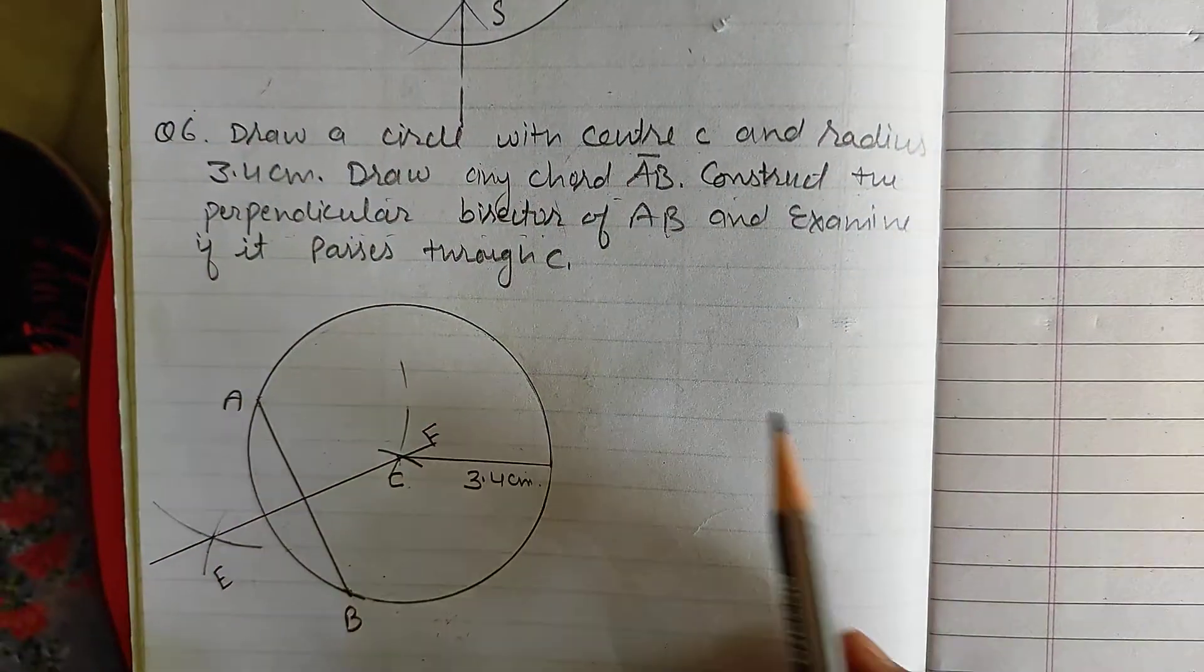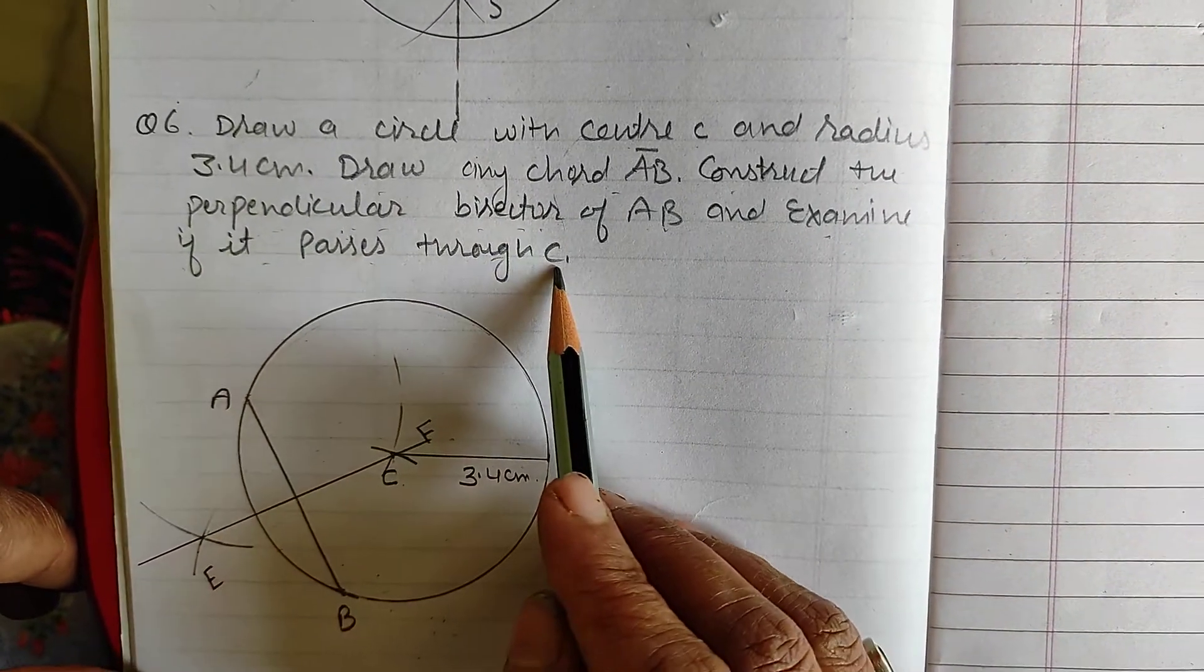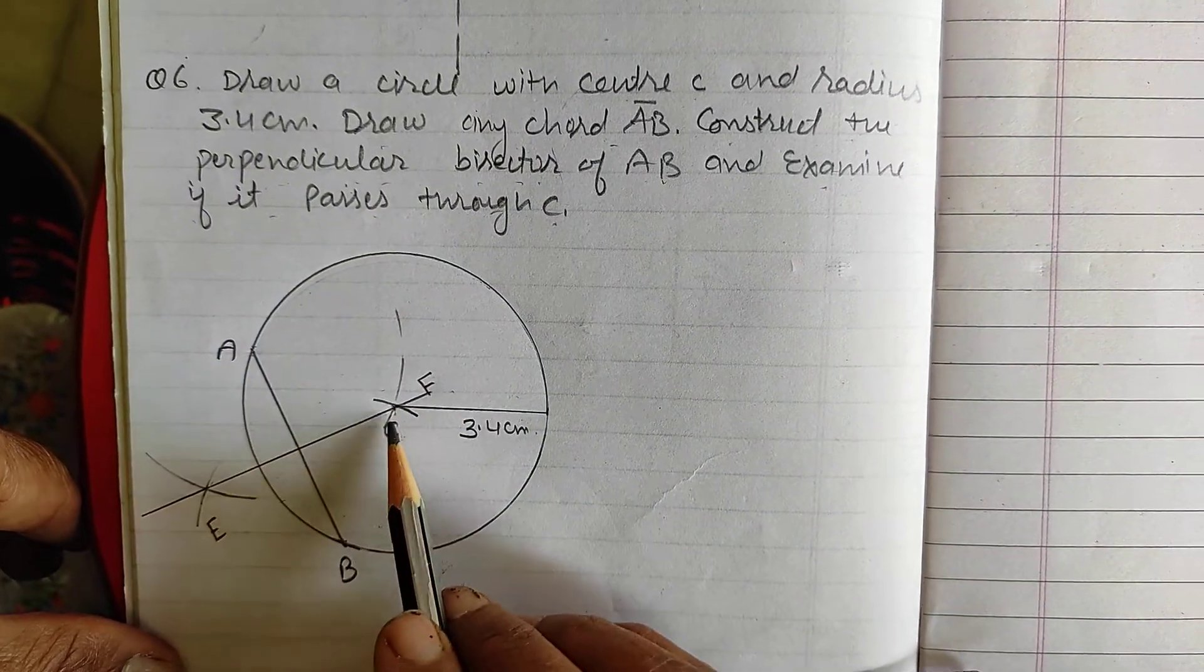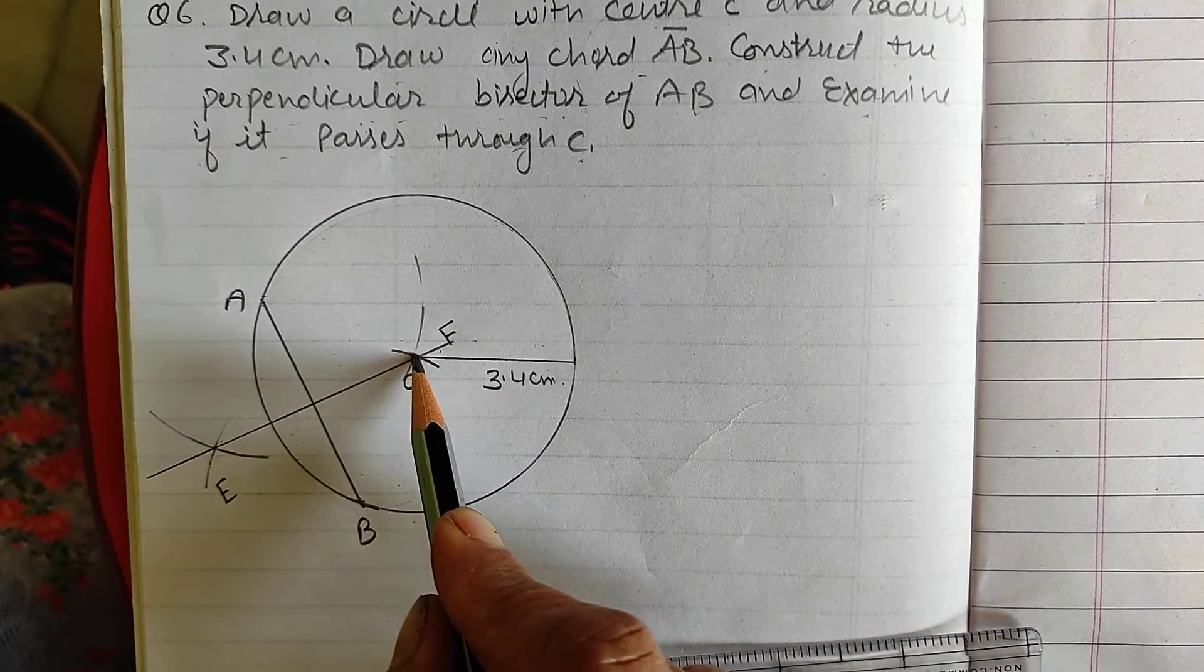This is E, F. Next is, examine if it passes through C. Now, E, F passes through the point C which is the center of the circle.